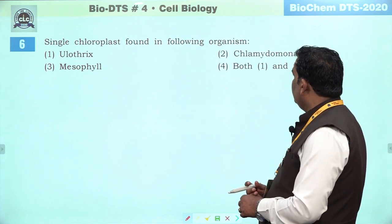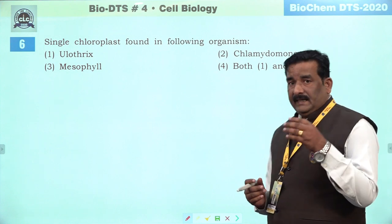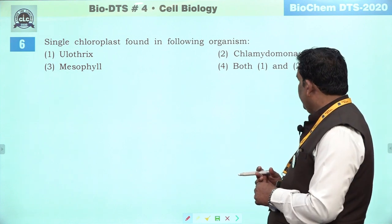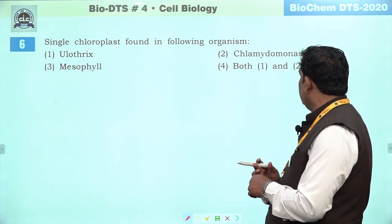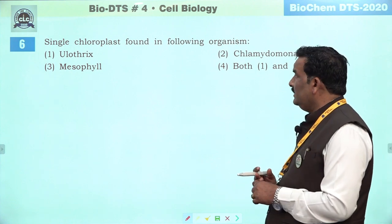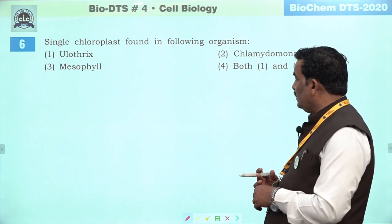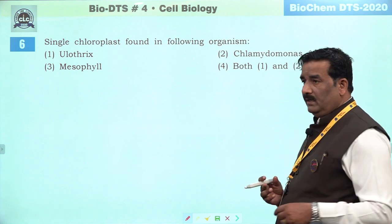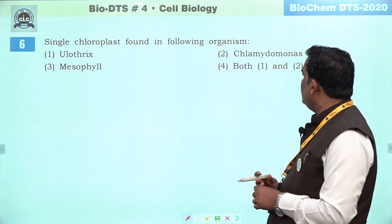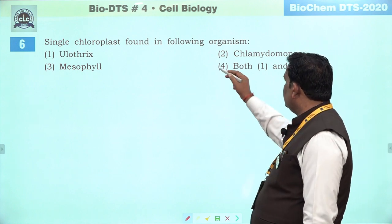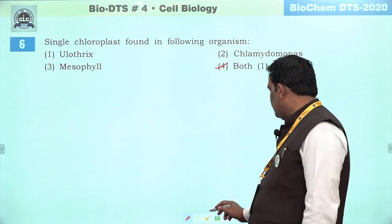Next question: single chloroplast found in following organism. NCRT mein yeh cheez explain hai. Chlamydomonas ki cell mein ek chloroplast hai. Ulothrix ki cell mein bhi har ek cell ke andar ek chloroplast hai. Mesophyll mein 20 se 40 ki presence hai. Iska matlab hai fourth humara answer sahi banega — first and second. Next question: cup shape and ribbon shape chloroplast found in following organism respectively. Cup shape Chlamydomonas ka unique character hai. Ribbon shape ya spiral chloroplast is a character of Spirogyra. Right answer is second.